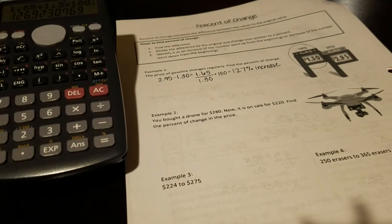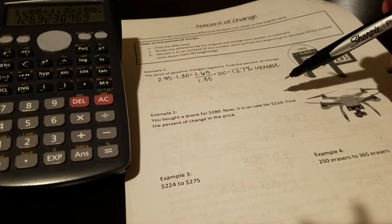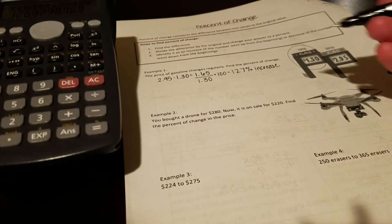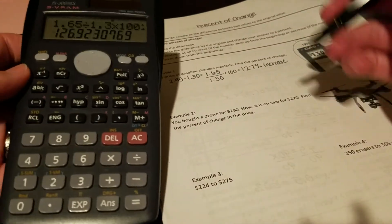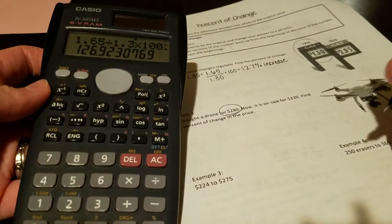In example number two, you bought a drone for $280. Now it is on sale for $220. Find the percent of change in the price. This is your original right here.